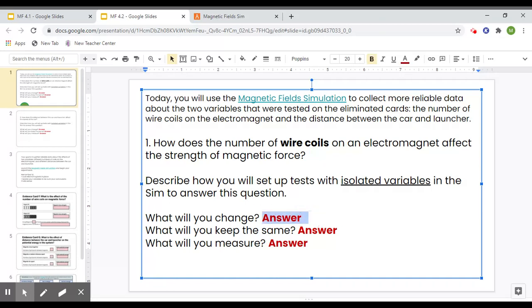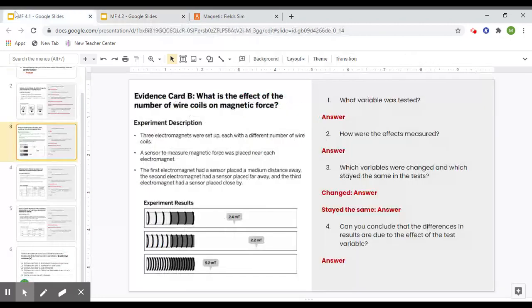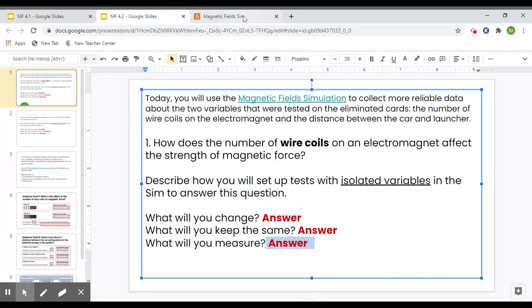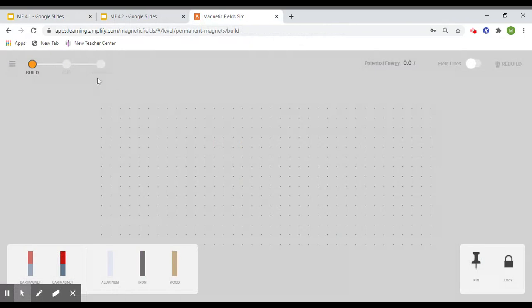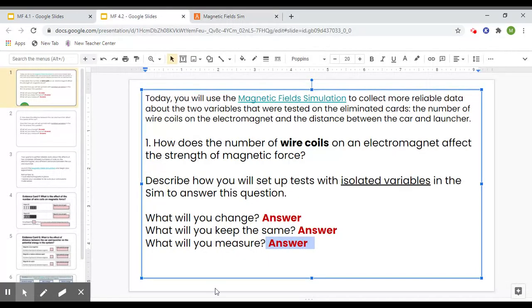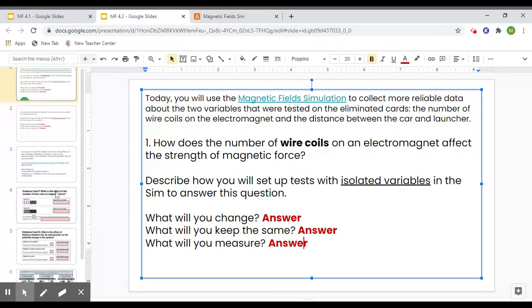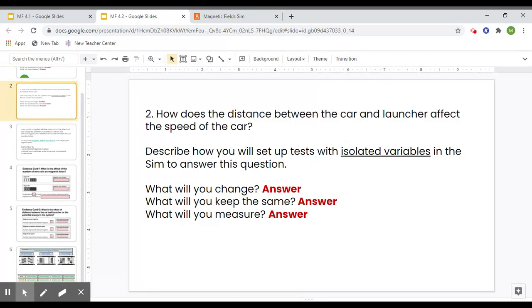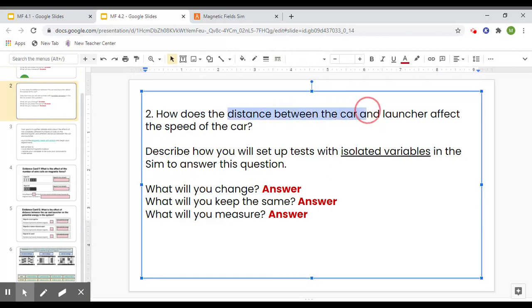So what will you change? That will be the number of wire coils. What will you keep the same? Try to think of everything else that you would keep the same in that test. And what will you measure? I know we haven't really gone over that much, but you can use this as an example. And in this simulation, in the Analyze tab, you do have that sensor option, so you can use that. You'll do the same thing for this one, but this one is testing distance between the car and launcher. So you will need to take tests at different distances, and that's what you will change.